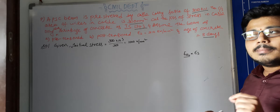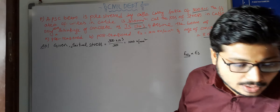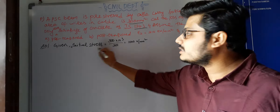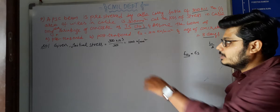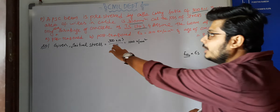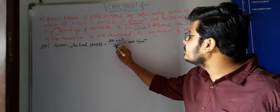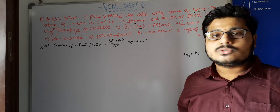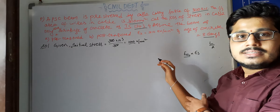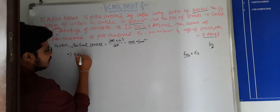First we need to find the initial stress. For post-tensioning the formula is ECS = 200 × 10⁻⁶ / log₁₀(t + 2). Initial stress = Force / Area = 300 kN / 300 mm² = 1 kN/mm² = 1000 N/mm². Now we will calculate the loss for pre-tension and post-tension.